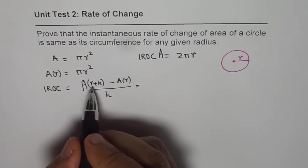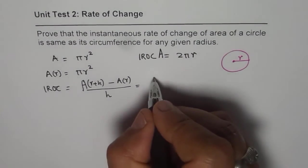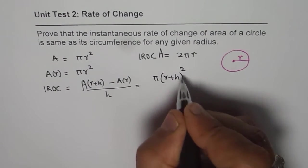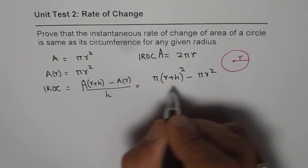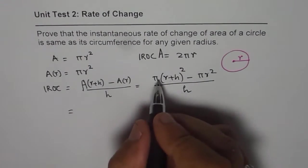So area in terms of r plus h, we will replace this r with r plus h. So we get this as pi times r plus h whole square minus area is pi r square over h. Is that okay? So we can expand this.